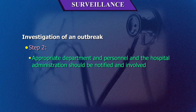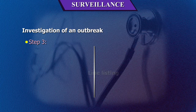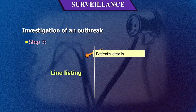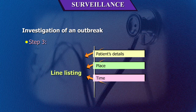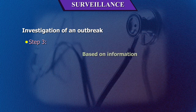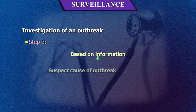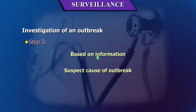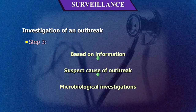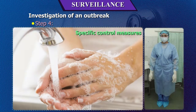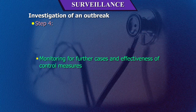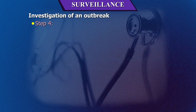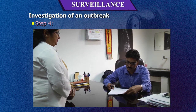Step 2: The appropriate department, personnel, and hospital administration should be notified and involved. Step 3: Line listing — for every case, patient details, place, time of occurrence, and infection details should be developed. Based on information and date, suspected causes of the outbreak should be formulated and relevant microbiological investigations should be carried out to find the source. Step 4: Specific control measures should be advised as soon as the cause is identified. Monitoring for further cases and effectiveness of control measures should be done, and a report prepared for presentation to the Infection Control Committee.